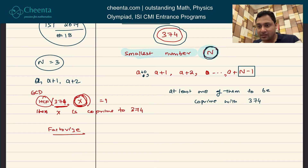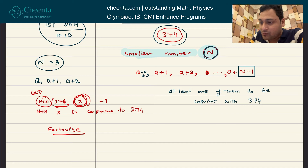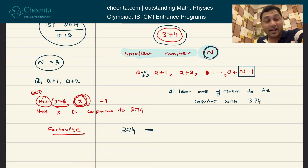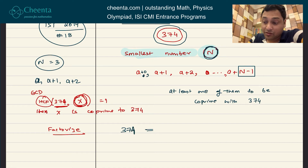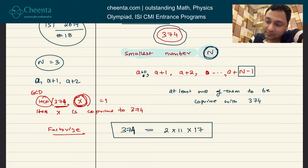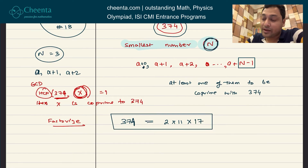Let's start the problem. We will begin with 374 and try to factorize it. The factorization is 2 times 11 times 17. You can easily check that.